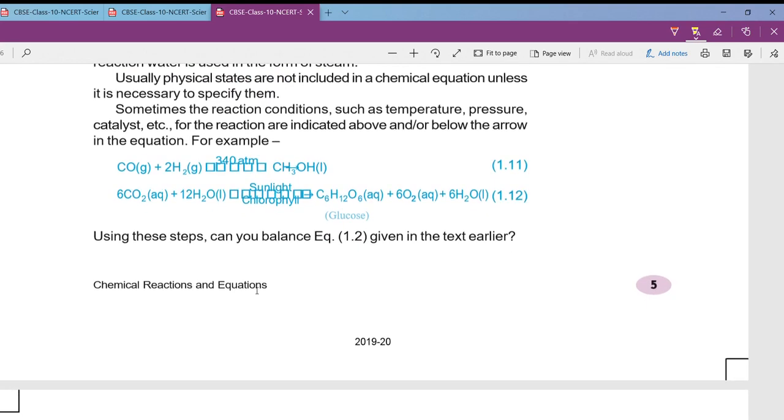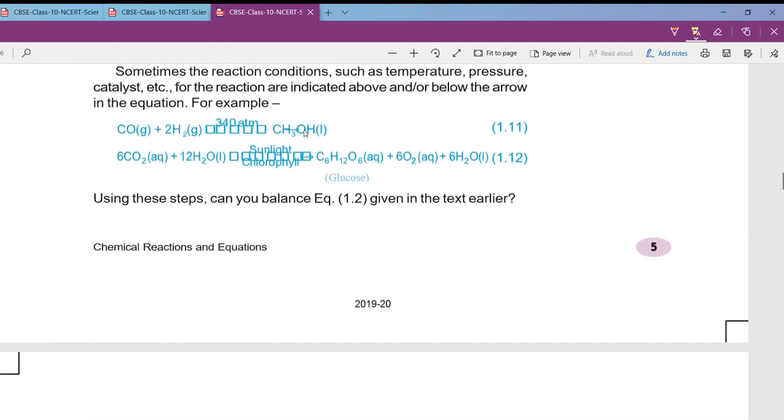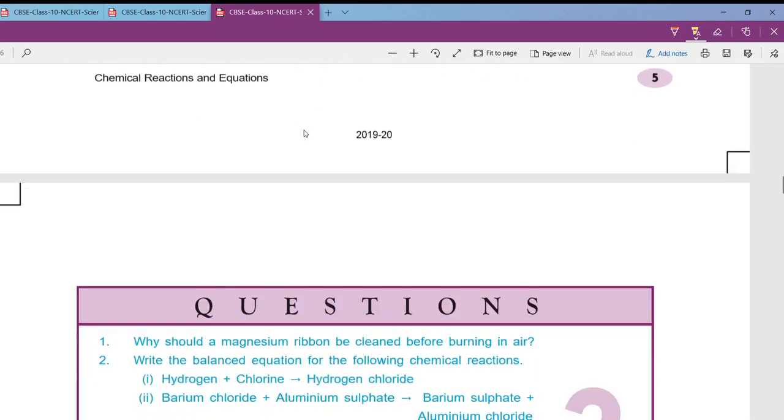Similarly they have given other examples like CO plus 2H2 giving rise to CH3OH. Now using the above all steps balance this equation. First of all let us check whether it is balanced or not. Number of carbon on reactant side is 1 and on product side is also 1. Hydrogen on reactant side are 4 and on product side are also 4. Like this whenever you see an equation anywhere in the textbook, practice how to balance so that you will become more perfect.